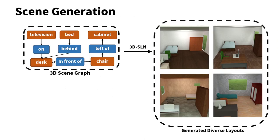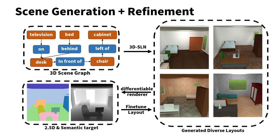We introduce two differentiable modules. The first we call a 3D scene layout network, or 3D SLN. This is a neural network which can take as input scene graphs and output per-object bounding boxes. The second is a differentiable renderer, which can take as input the proposed bounding boxes. It can then sample object meshes and compute losses from exemplar layouts to further refine object positions.